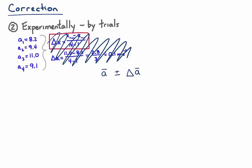These symbols here just mean the average value of A, here with a little line on the top, plus or minus some uncertainty on that average value.